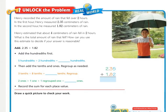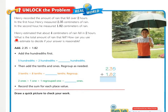Unlock the problem. Henry recorded the amount of rainfall that fell over two hours. In the first hour, Henry measured 2 and 35 hundredths centimeters of rain. In the second hour, he measured 1 and 82 hundredths centimeters of rain. Henry estimated that about 4 centimeters of rain fell in two hours. What is the total amount of rain that fell? How can you use this estimate to decide if your answer is reasonable?